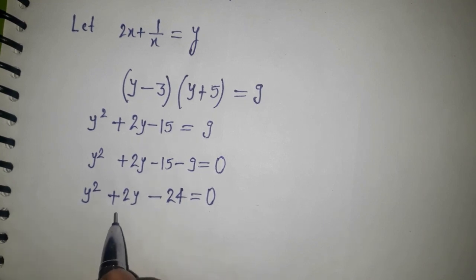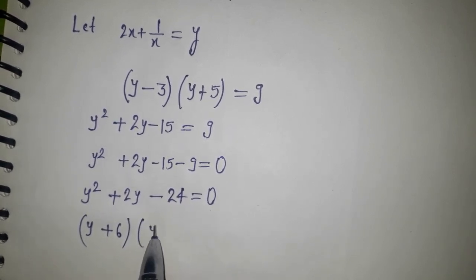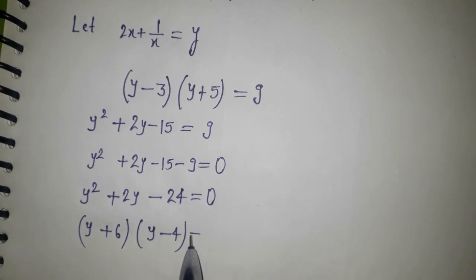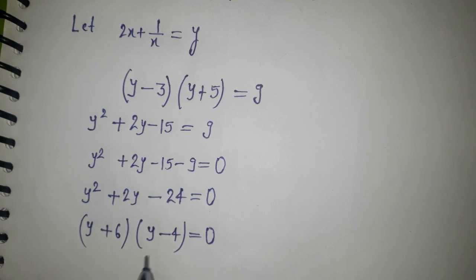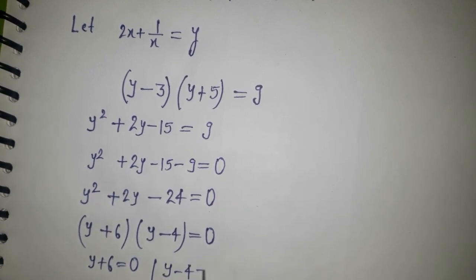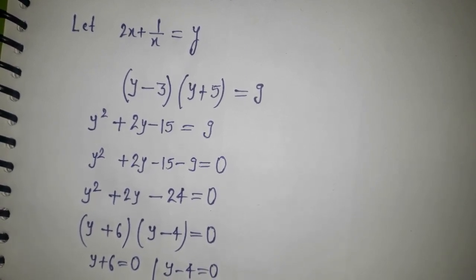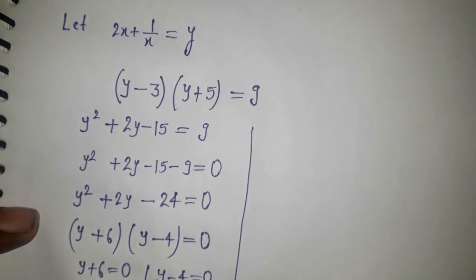We can factorize y² + 2y - 24 = 0 using factors 6 and 4, since 6 × 4 = 24 and -4 + 6 = 2. This gives (y + 6)(y - 4) = 0. So y = -6 or y = 4.